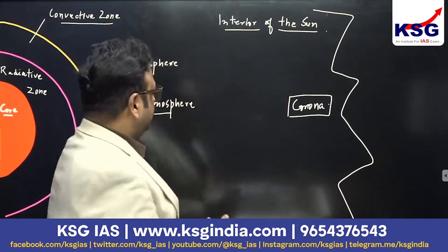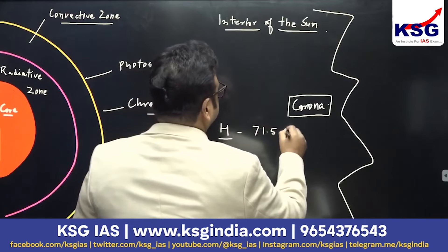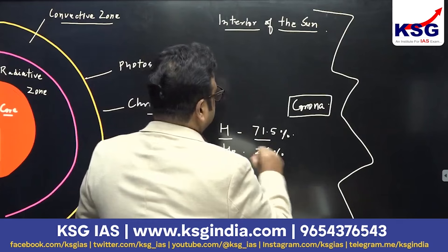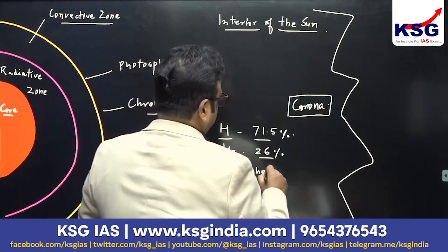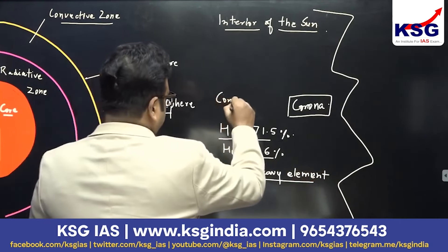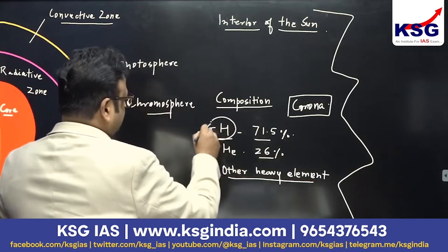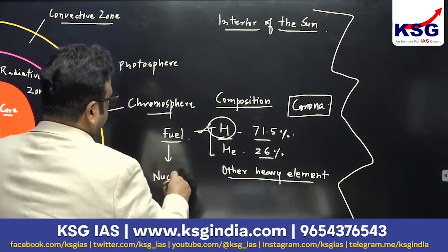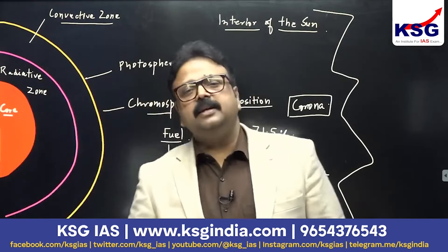The sun is made up of hydrogen and helium. Largely it is hydrogen — almost 71.5 percent of the sun's mass is made up of hydrogen, almost 26 percent is helium, and the remaining 2.5 percent is other heavy elements. Out of these gases, hydrogen is the fuel involved in the nuclear fusion reaction, and this nuclear fusion is responsible for the energy the sun is radiating.